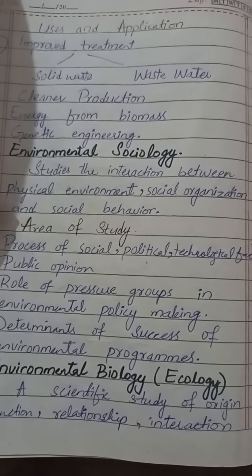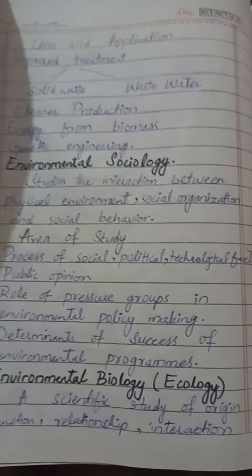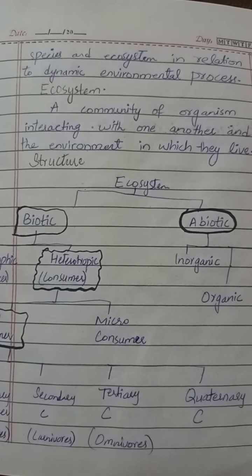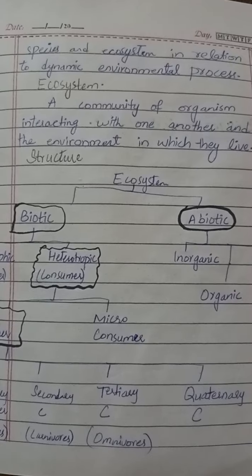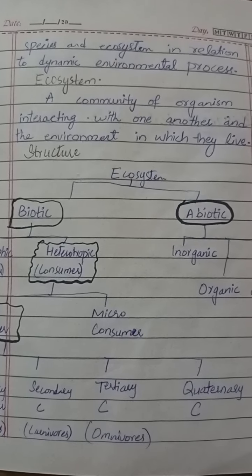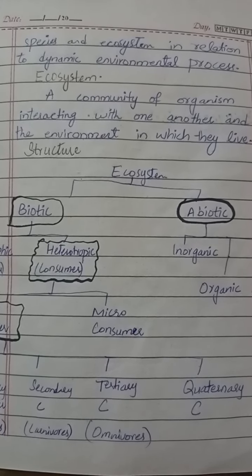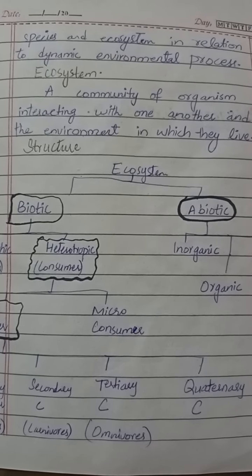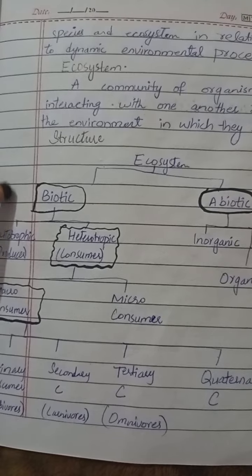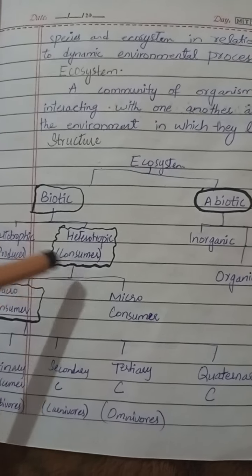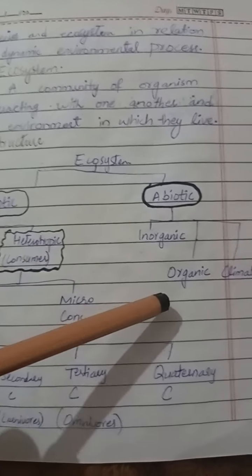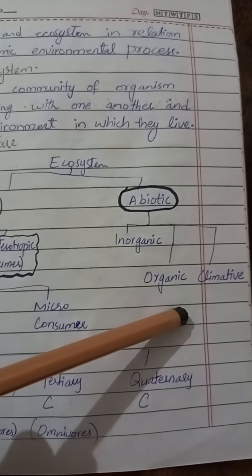Environmental biology, also called ecology, is a scientific study of the origin, function, relationships, interactions of species and ecosystems in relation to dynamic environmental processes. An ecosystem is a community of organisms interacting with one another and the environment in which they live. It is divided into biotic and abiotic components. Biotic includes heterotrophic consumers and autotrophic producers; abiotic factors include inorganic, organic, and climatic factors.